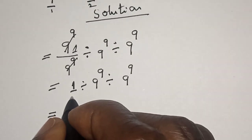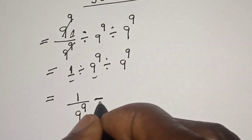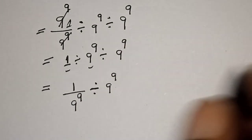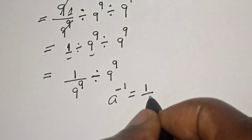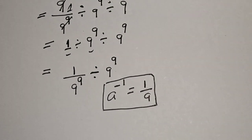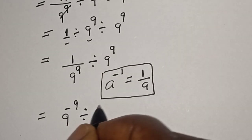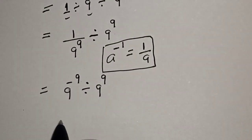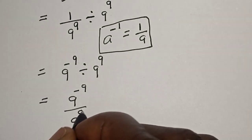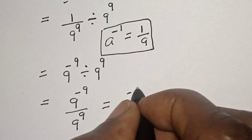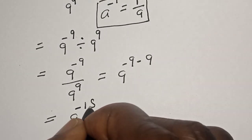So this is equal to 1 over 9 raised to power 9 divided by 9 raised to power 9. Taking note of the exponent division rule, this becomes 9 raised to the power minus 9 minus 9, which is equal to 9 raised to the power minus 18.